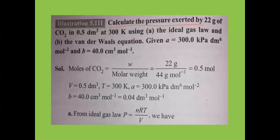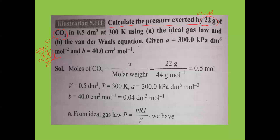Next problem: calculate the pressure exerted by 22 grams of CO2 gas. Gram molecular weight of CO2 is 44 g/mol. Number of moles = given weight / gram molecular weight = 22/44 = 0.5 moles. Volume is 0.5 decimeter³ (= 0.5 liters, since 1 dm³ = 1 liter) at 300 K.